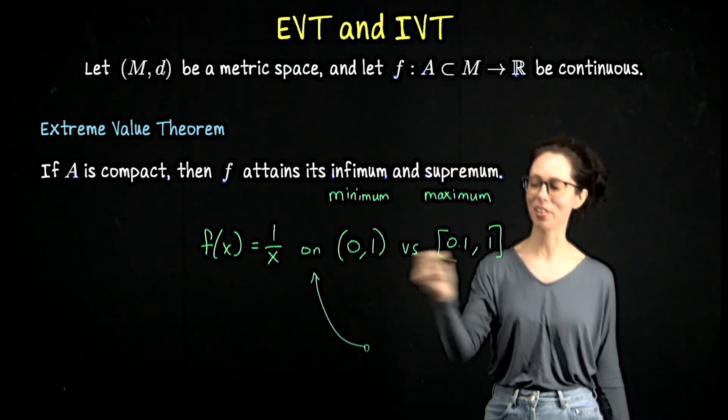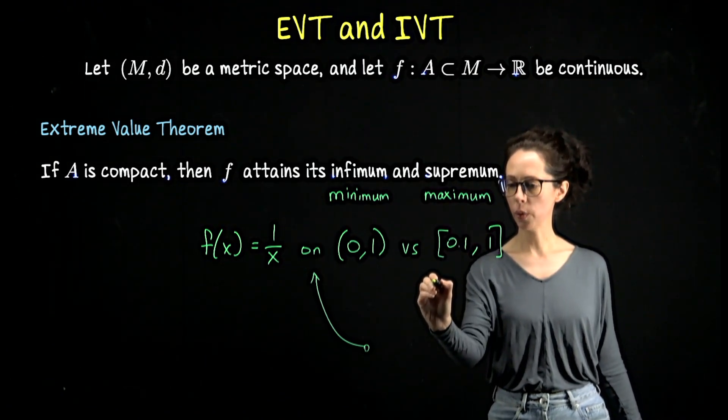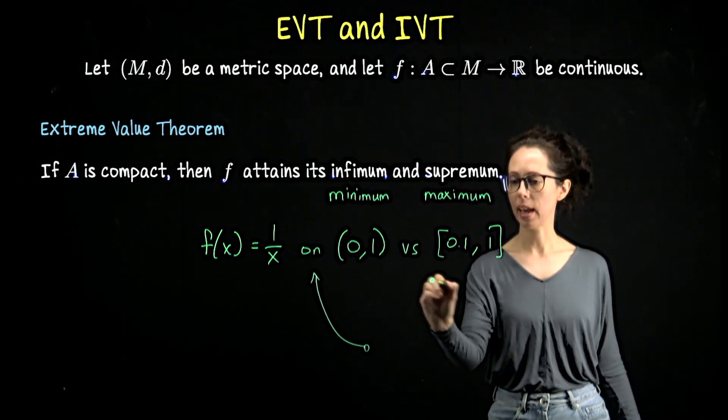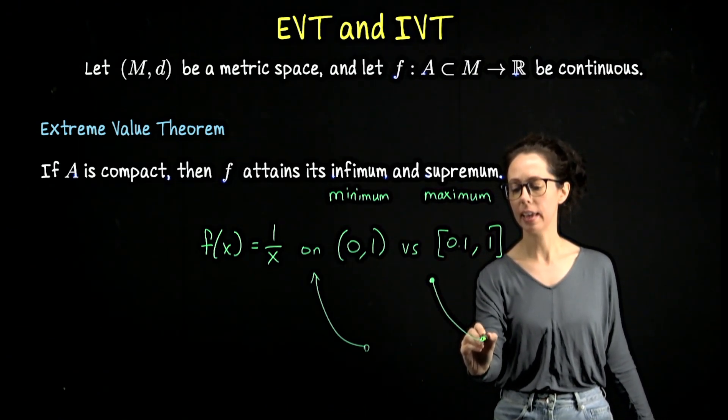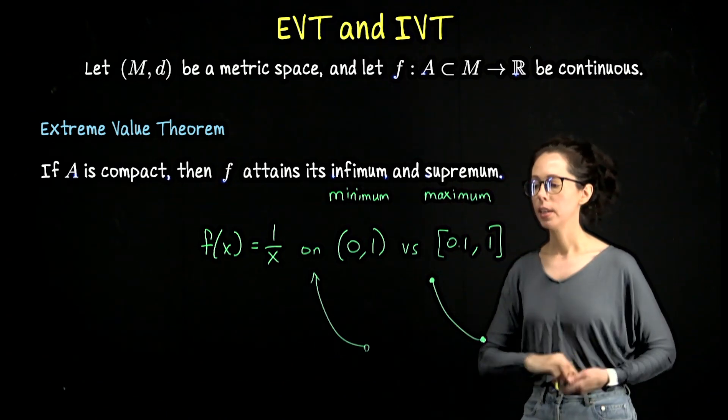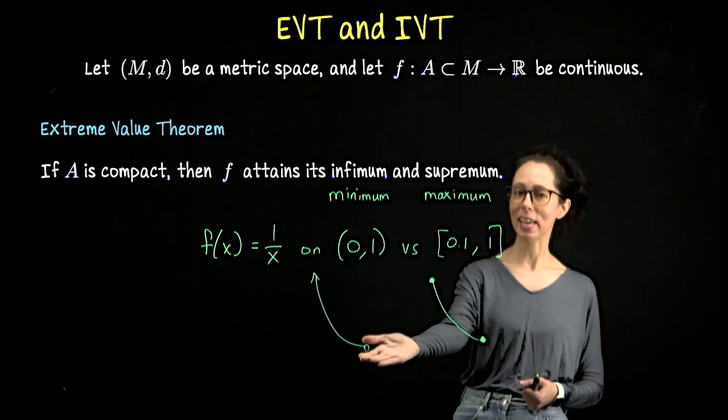Here's what the function would do - this would be the graph of such a function over that open domain. Whereas here, it's going to stop at 1 over a tenth, so at 10, and likewise we're going to come down and actually hit this value.